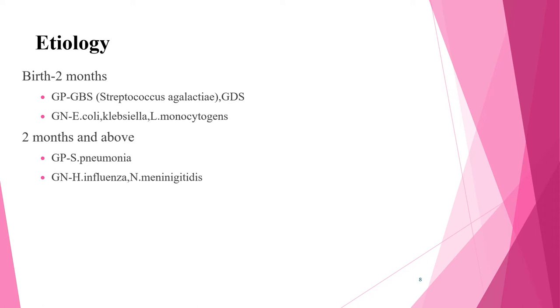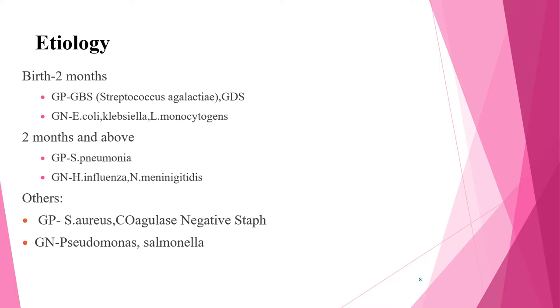In children above two months of age, from gram-positive organisms Streptococcus pneumoniae is most common, while from gram-negative organisms Haemophilus influenzae and Neisseria meningitidis are more common. Other etiologies above two months include coagulase-negative Staphylococcus from gram-positive, and Pseudomonas and Listeria monocytogenes from gram-negative organisms.